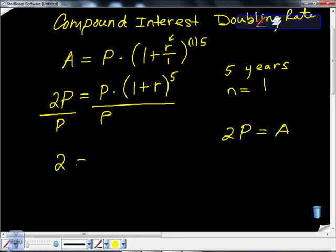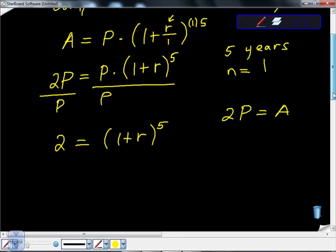Now we have 2 is equal to 1 plus the rate to the fifth power. Hopefully you can see this is actually not that bad. This can actually be done. Remember where we started was such a mess, but we took our time, got rid of as many variables as we could that we could fill in with numbers, and the rest of them we tried to get replacement values.